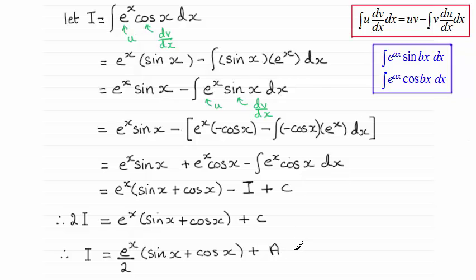Now I'll take you through this just in case there were any problems. The way to do these ones is to just say let I equal this integral, and then we use integration by parts. I've chosen u to be the first part and dv by dx to be the second part, cosine x here. You don't have to do that; you can have u as cosine x and dv by dx as e to the power x. You should still end up with the same answer.